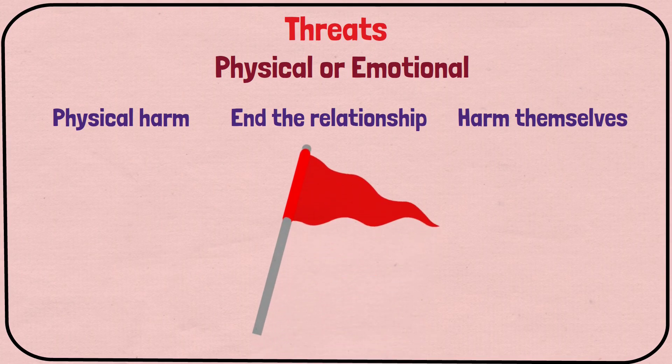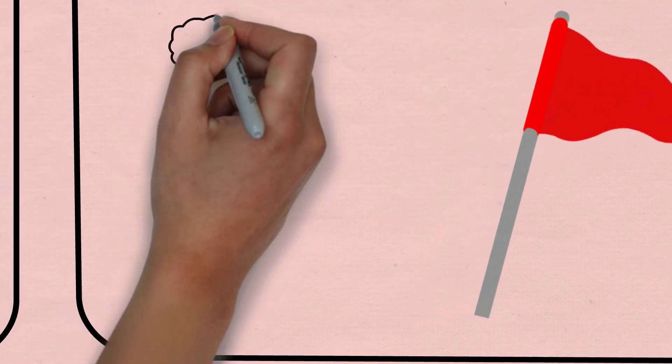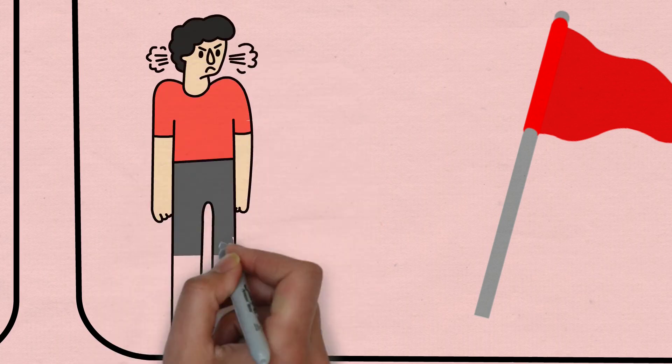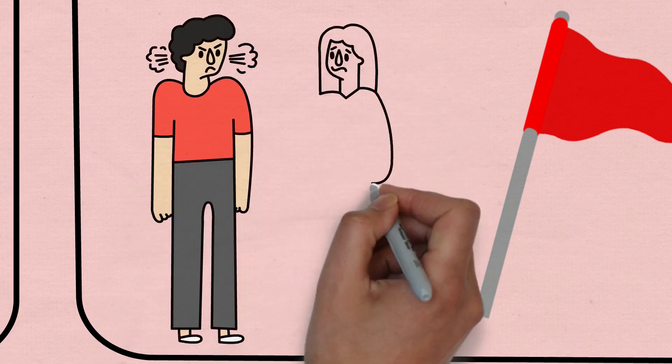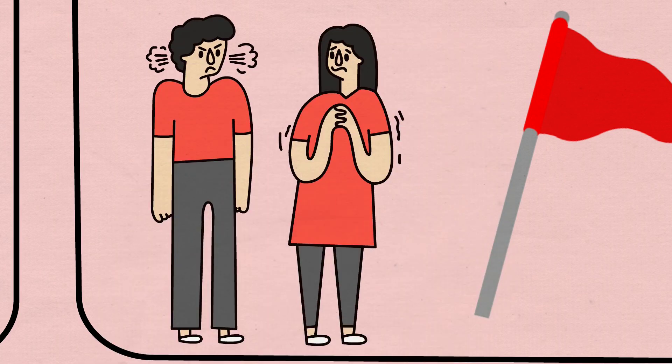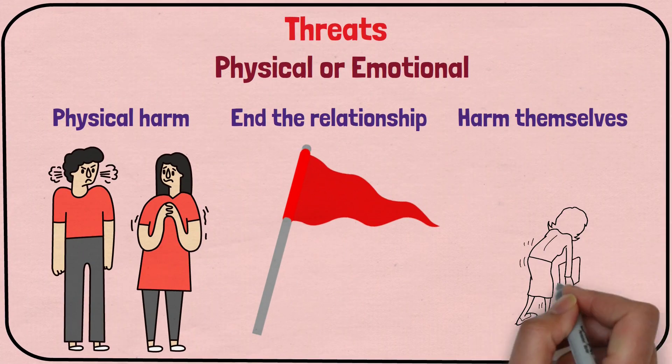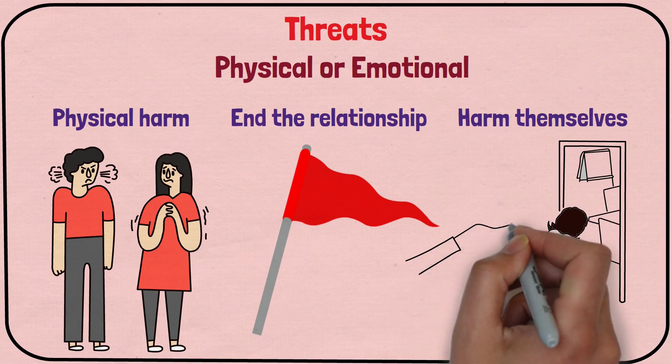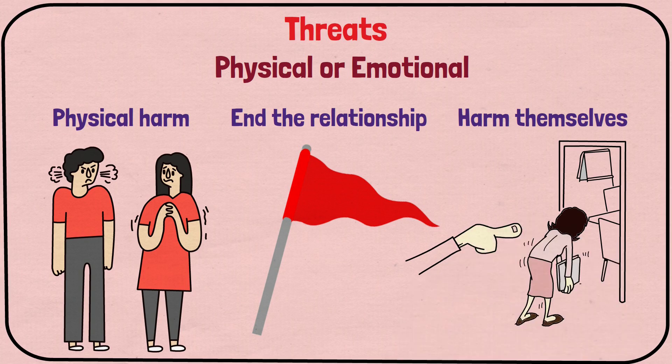A red flag that should not be tolerated. Threats are a form of manipulation and control, and they're meant to make you feel afraid and submissive. They're used to bully you into doing what the abuser wants, and are often accompanied by other forms of emotional abuse, such as criticism, isolation, and gaslighting.